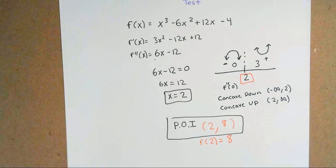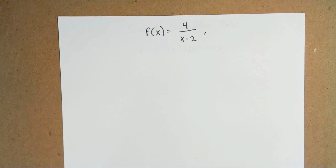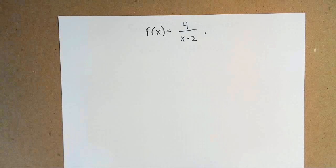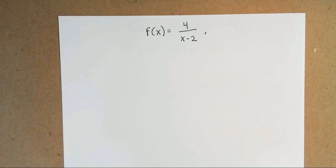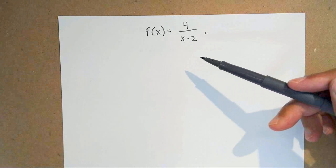Now we're going to work on our next example: f(x) equals 4 over x minus 2. This is a bit more of a challenging problem because you have to find two derivatives — your first derivative and then your second derivative. A lot of people may want to use the quotient rule because they see a fraction, but any time you have just a number on top by itself, it's easier to rewrite it.